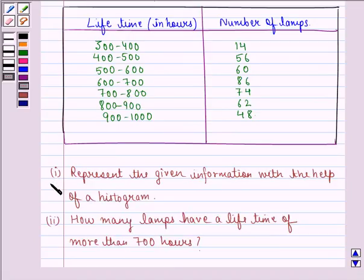So the first question is represent the given information with the help of a histogram and second is how many lamps have a lifetime of more than 700 hours. So first of all we see the solution to the first part.